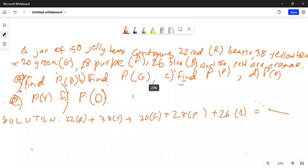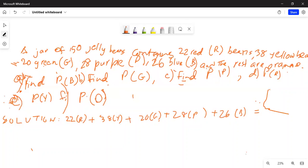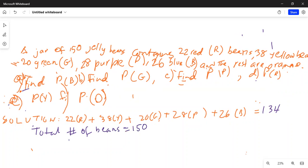So it equals 134. Here is 134. We know total number, so total number of beans is 150. Then number of orange beans equals 150 minus 134, which is 16.